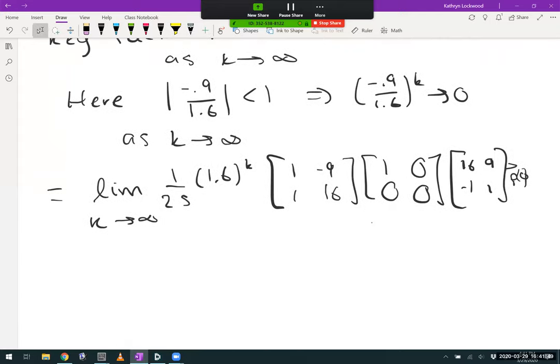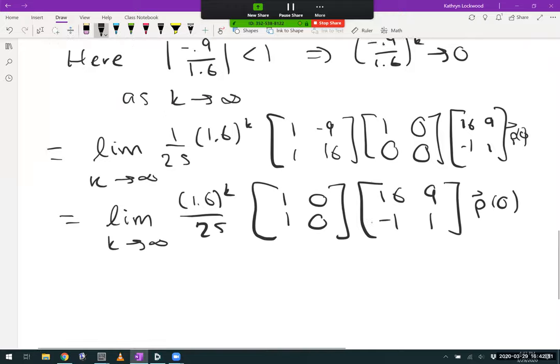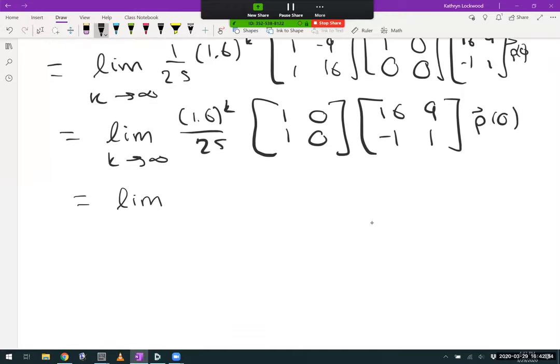Now, let's multiply through. Factor 1.6 to the k over 25 still out front. Multiplying these first two matrices together, we'll have [1, 0; 1, 0]. We still have the portion coming from P inverse. Multiply through again. This time, we get the matrix [16, 9; 16, 9].